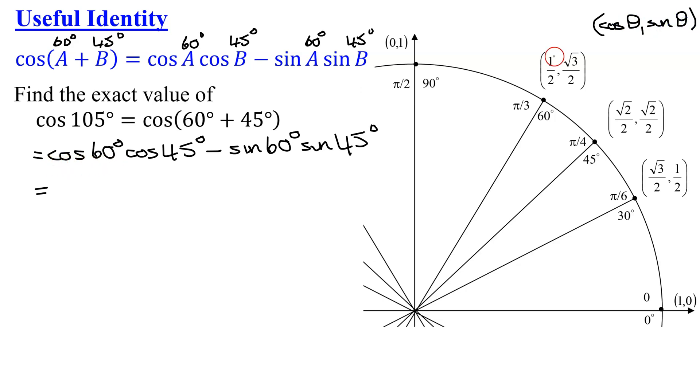So cosine of 60 degrees, the x-coordinate of this point, so it's 1/2, times the cosine of 45 degrees, the x-coordinate of this point, the square root of 2 divided by 2, minus the sine of 60 degrees, here's 60 degrees, the y-coordinate is the square root of 3, divided by 2.